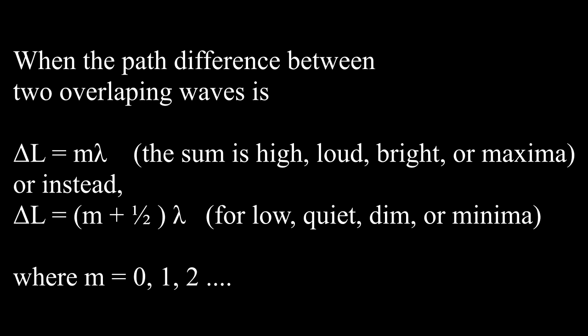Using m as an integer 0, 1, 2, 3. When the path difference between two overlapping waves is an integer number of wavelengths, then the sum is high, loud, bright, or a maximum, depending on whether we are adding water waves, sound waves, light waves, or some other waves.